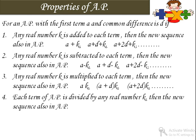उसी तरह से अगला rule है कि if each term of AP is divided by any real number k, then the new sequence will also be in AP. जिस तरह से multiply करने पर नया sequence AP में होता है, उसी तरह divide करने पर भी होगा. For example, sequence 5, 10, 15, 20, 25, 30 — आपने 5 से divide कर दिया, आपको 1, 2, 3, 4, 5 मिलेगा. इस तरह से चारों rules — addition, subtraction, multiply, divide — सभी में नया sequence AP में रहेगा.